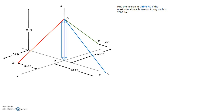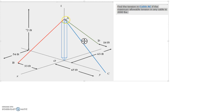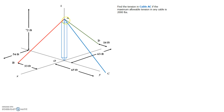So I have a red one, a blue one, and a green one that are supporting it. The problem asks us to find the tension in cable AC — the blue one — such that the maximum allowable tension in any cable is 2,000 pounds.